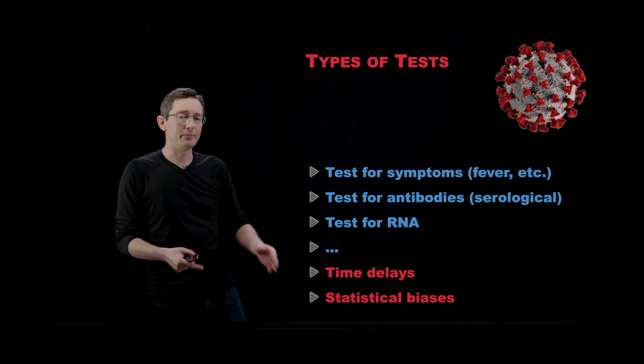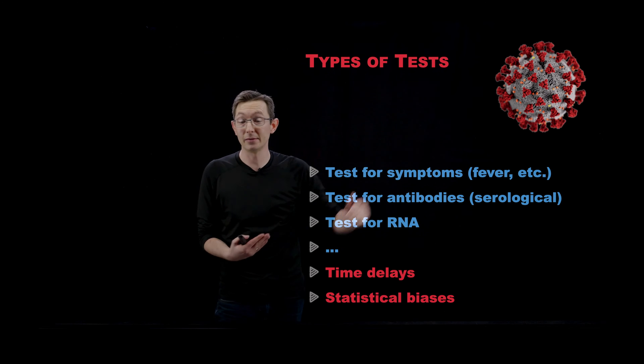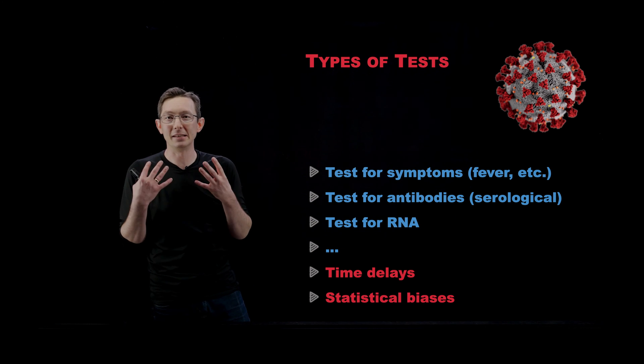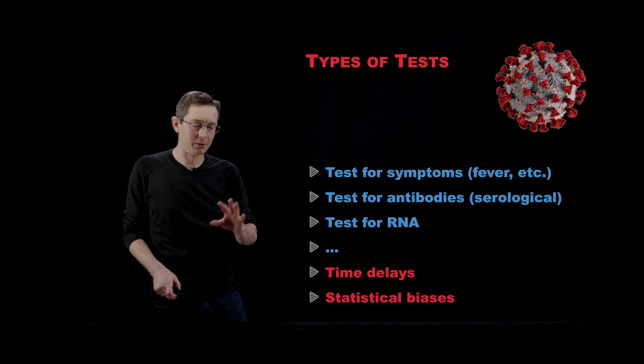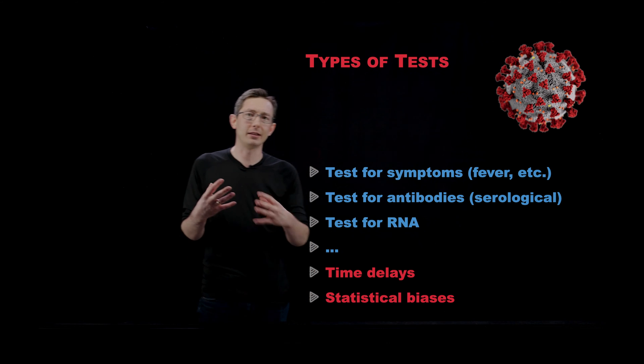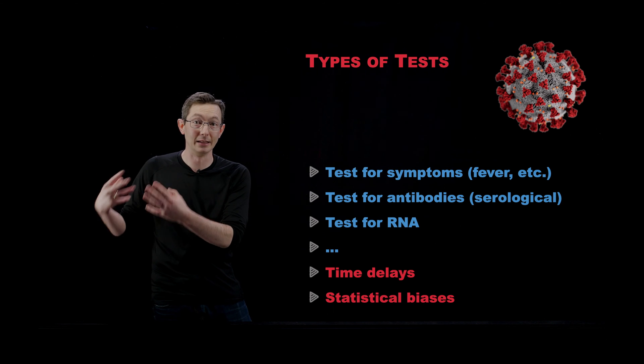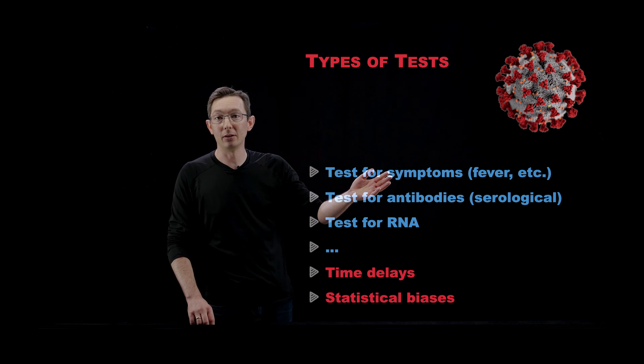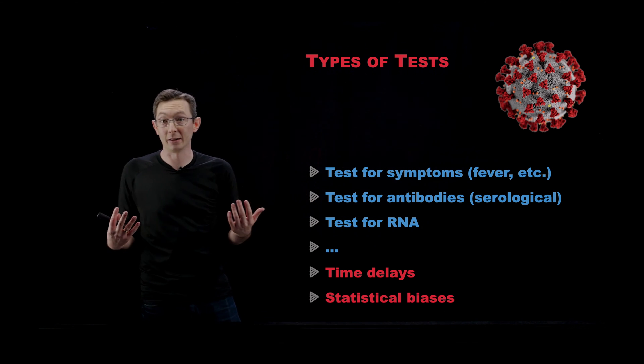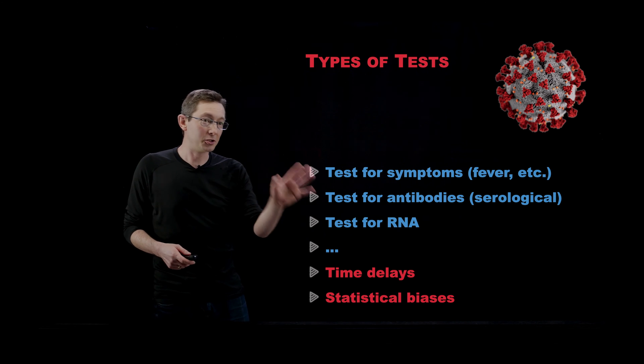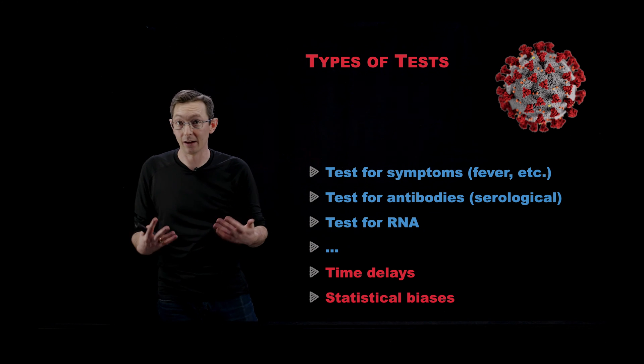There's also issues with statistical bias. If you only test people who are sick and who have severe symptoms who go to the hospital, you're going to get a massively skewed sample of what the actual population statistics look like. That's a huge problem. We know that there are many asymptomatic carriers who have had COVID-19 and didn't show symptoms. If you only test people in the hospital, you get a massively skewed number of all the important parameters that you need when you're modeling this system.